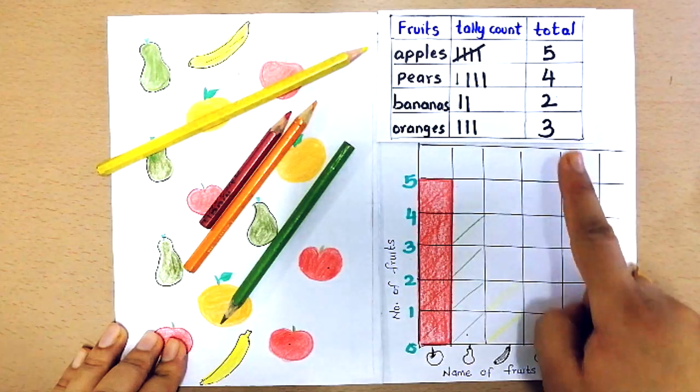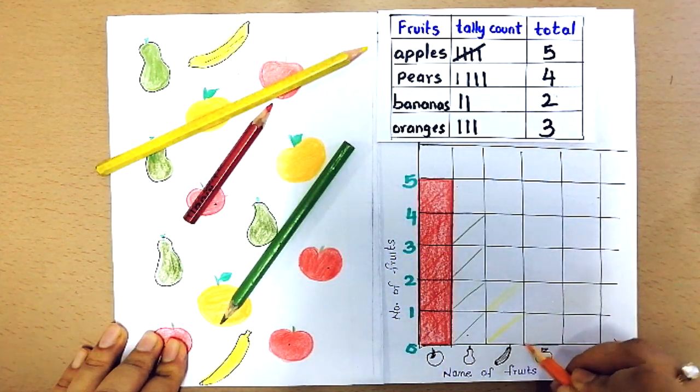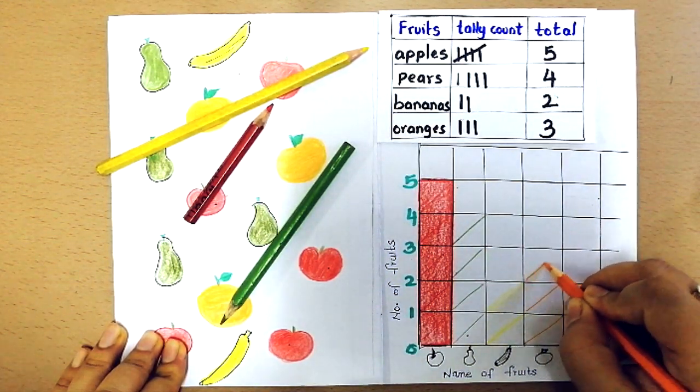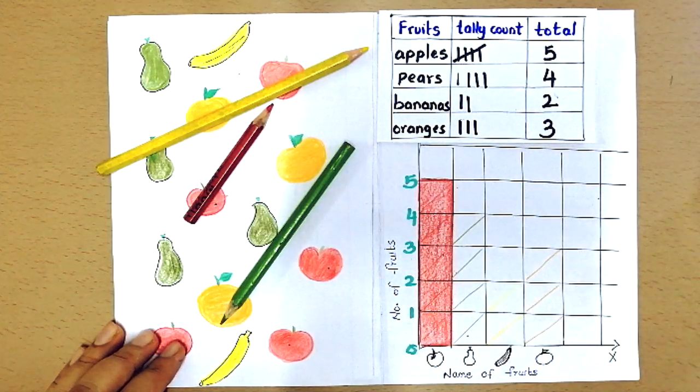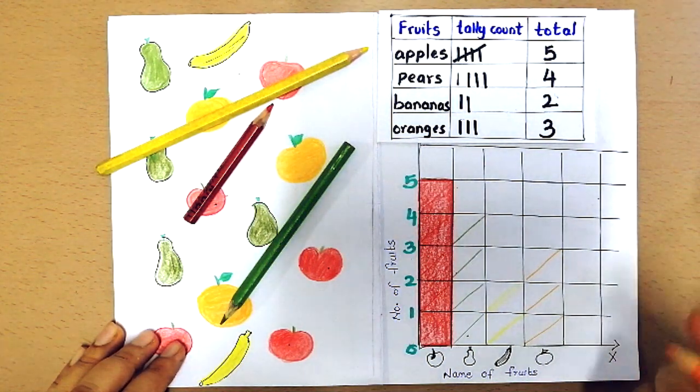And I have 3 oranges. So let me shade or color 1, 2, 3 blocks with orange. Orange for orange.